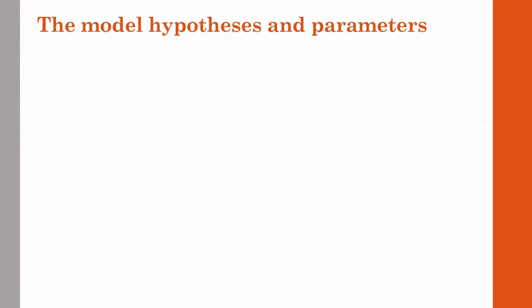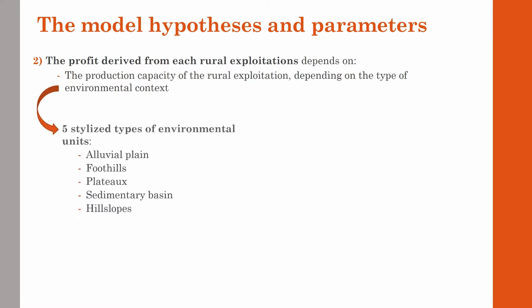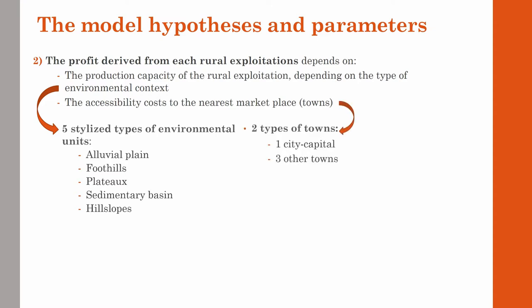The other element taken into account by the landowner when deciding what to do with each exploitation is the profit derived from it, or expected from a new one. This profit depends first on the production capacity of the exploitation according to its environmental context. At this first stage, we chose five stylized types of environmental units: alluvial plain, foothills, plateau, sedimentary basin, and hill slopes. The profit also takes into account the cost of transporting the production to the nearest marketplace. We selected two types of town — one city capital and three other towns — and created the city capital with a specific attractivity for Gallo-Roman aristocrats, as it is where they exercise their political functions.